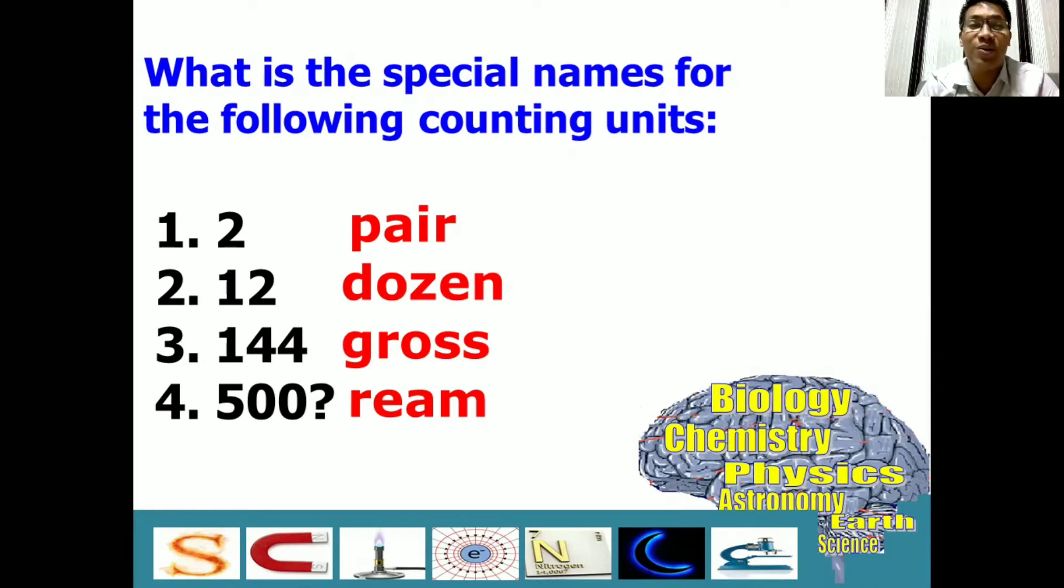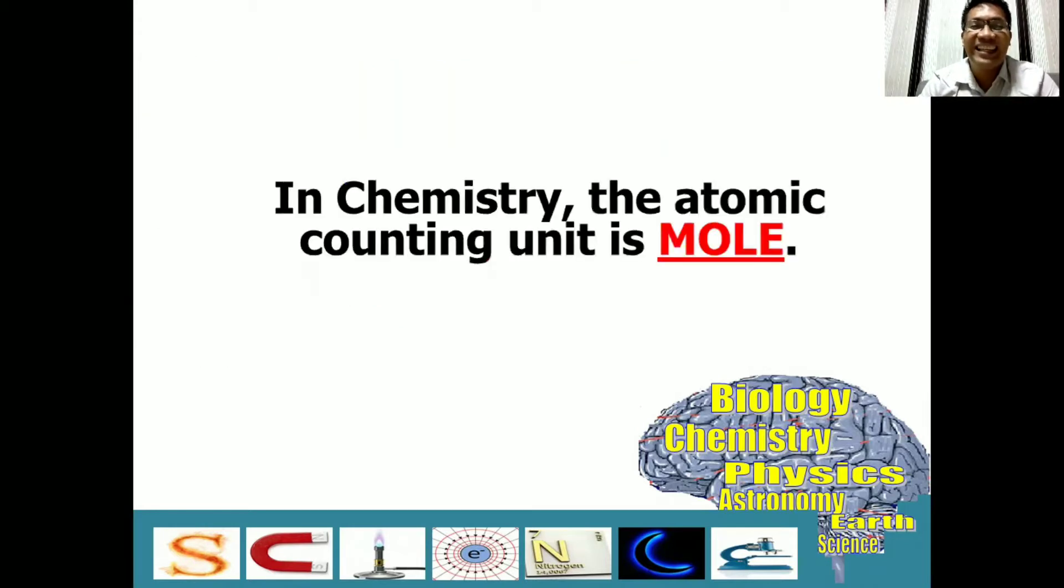And these are some of the special names we use for counting units. And what's the connection of this to our lesson today about mole? Here it is! In chemistry, the atomic counting unit is mole, just like ream, dozen, pair, or gross. We use mole as a counting unit.